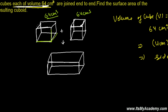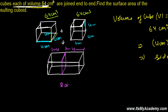So each cube has a side of 4 centimeter — meaning length is 4 cm, breadth is 4 cm, and height is 4 cm. After combining the two cubes, since each had length 4 cm, the total length becomes 8 centimeter. The breadth remains 4 centimeter, and the height is also 4 centimeter — from here to here.